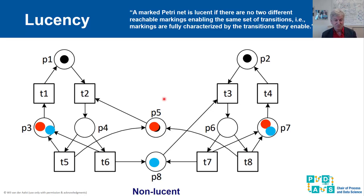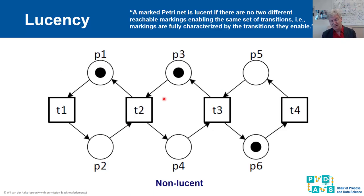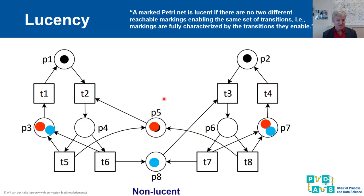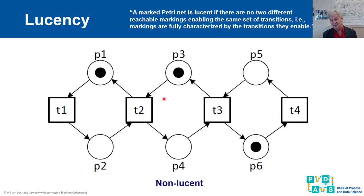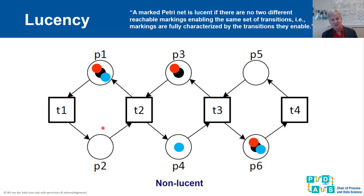Even a simple marked graph — a T-net where every place has one input and one output — can be non-lucent. In this super-simple mark graph, there are two reachable markings that both enable T1 and T4. We can reach the second marking by firing T1 and T2, and in both the initial and resulting markings, T1 and T4 are enabled. So this well-formed, marked-graph net is still non-lucent.